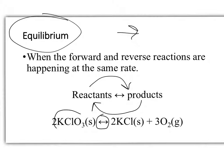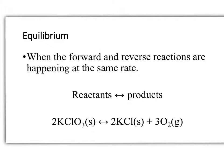So that means that this potassium chlorate is going to break down into potassium chloride and oxygen. But it also means that the potassium chloride and oxygen will react to form potassium chlorate. It's reverse and forward reactions. When it happens at the same rate, again, we call that equilibrium.